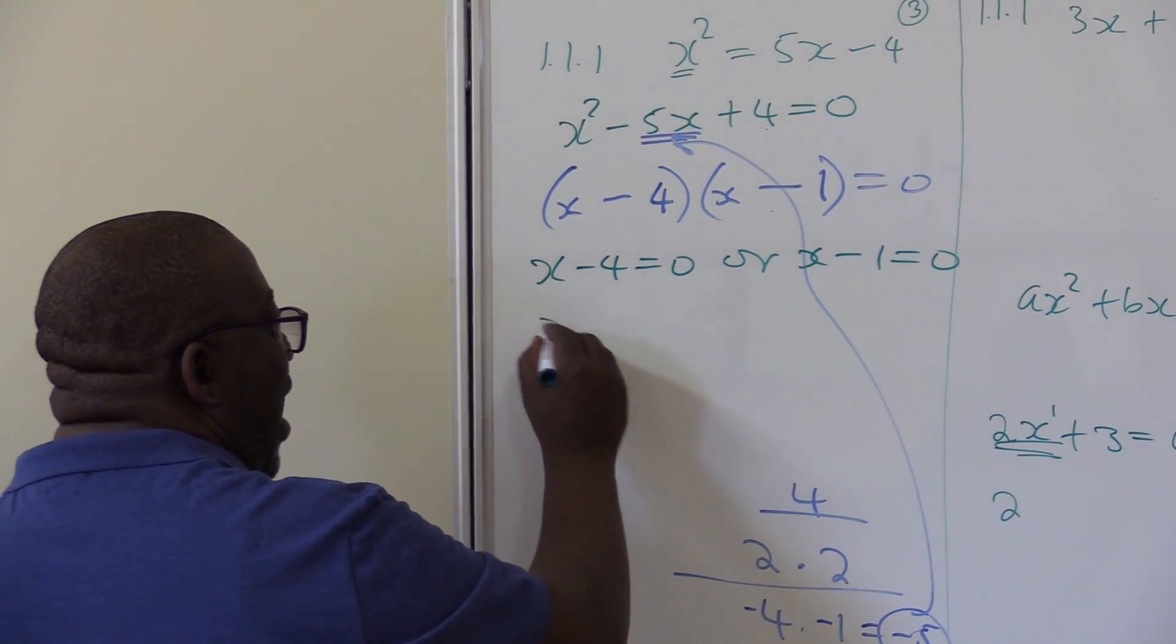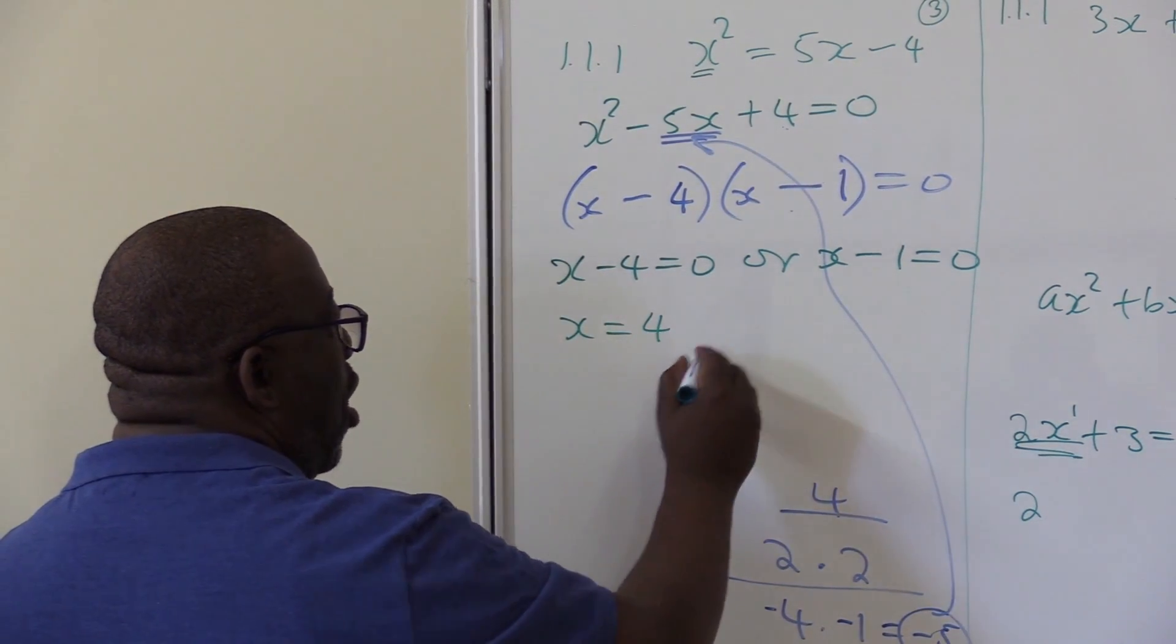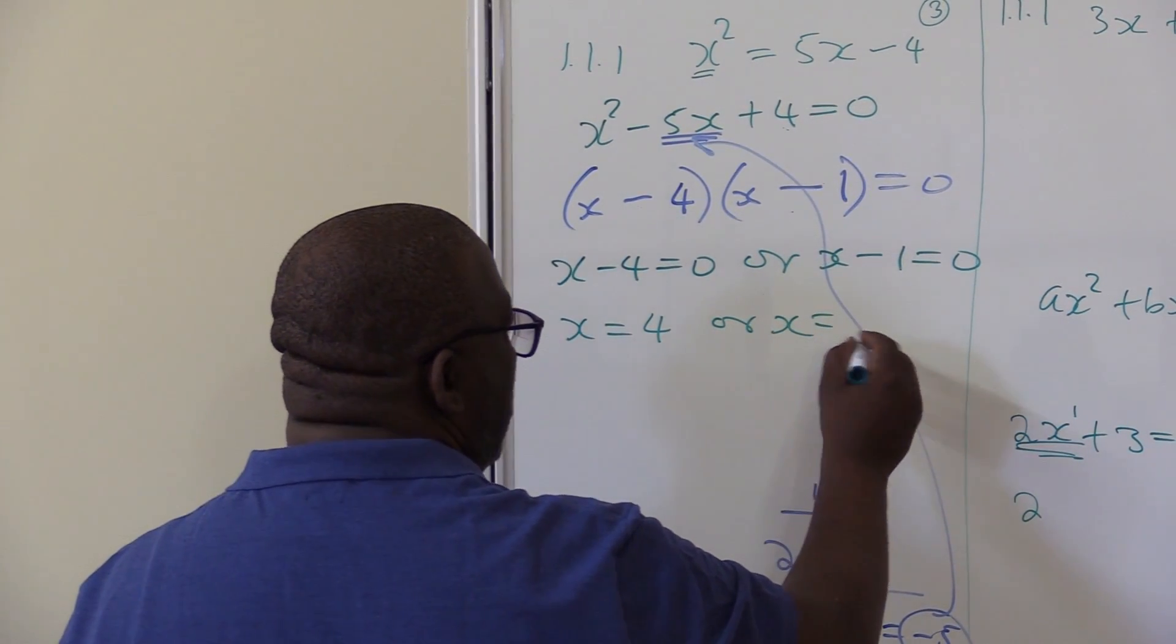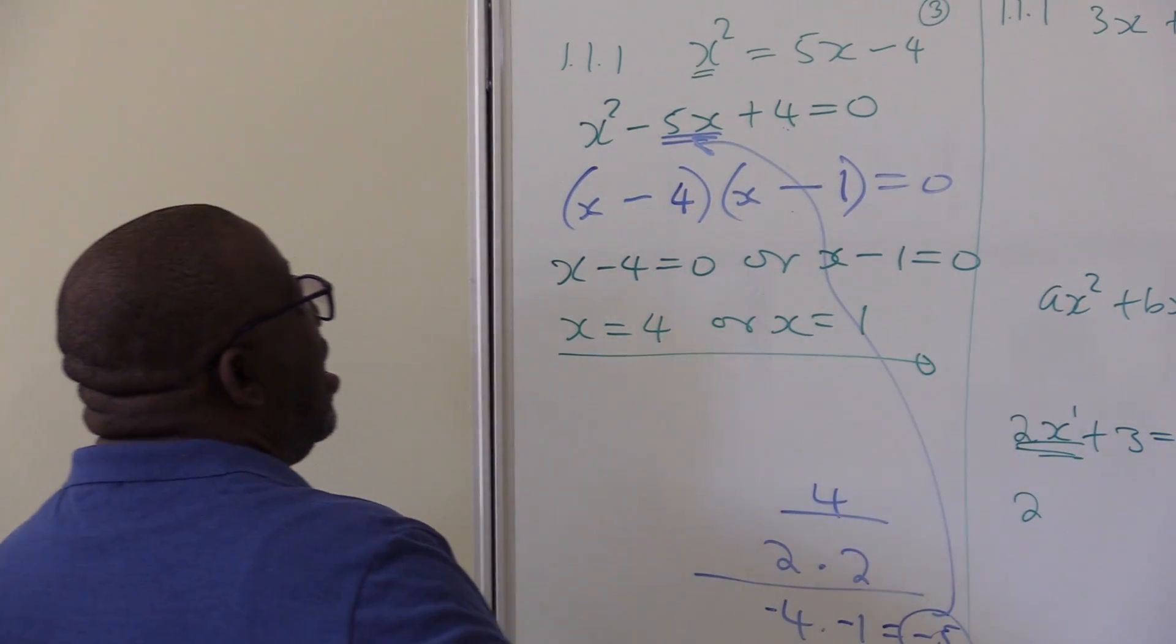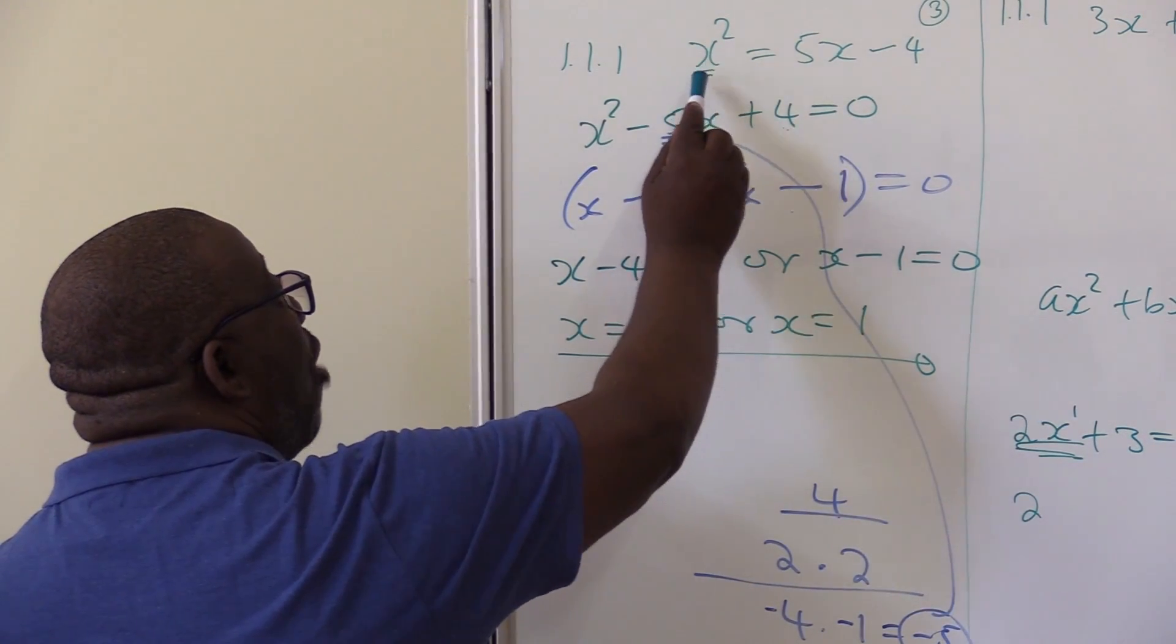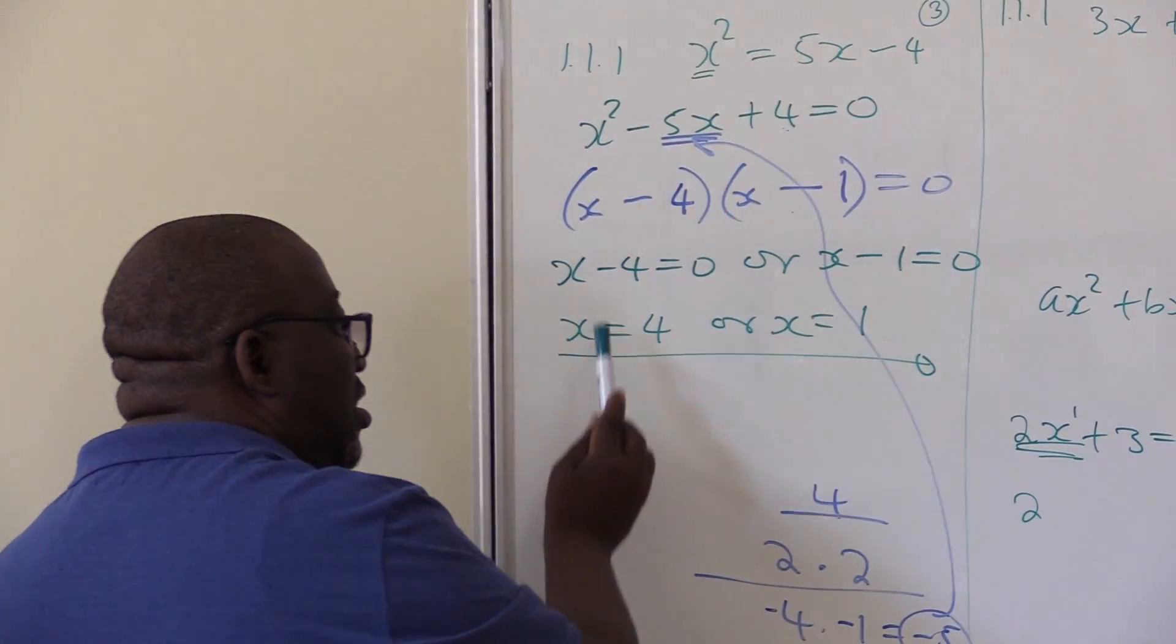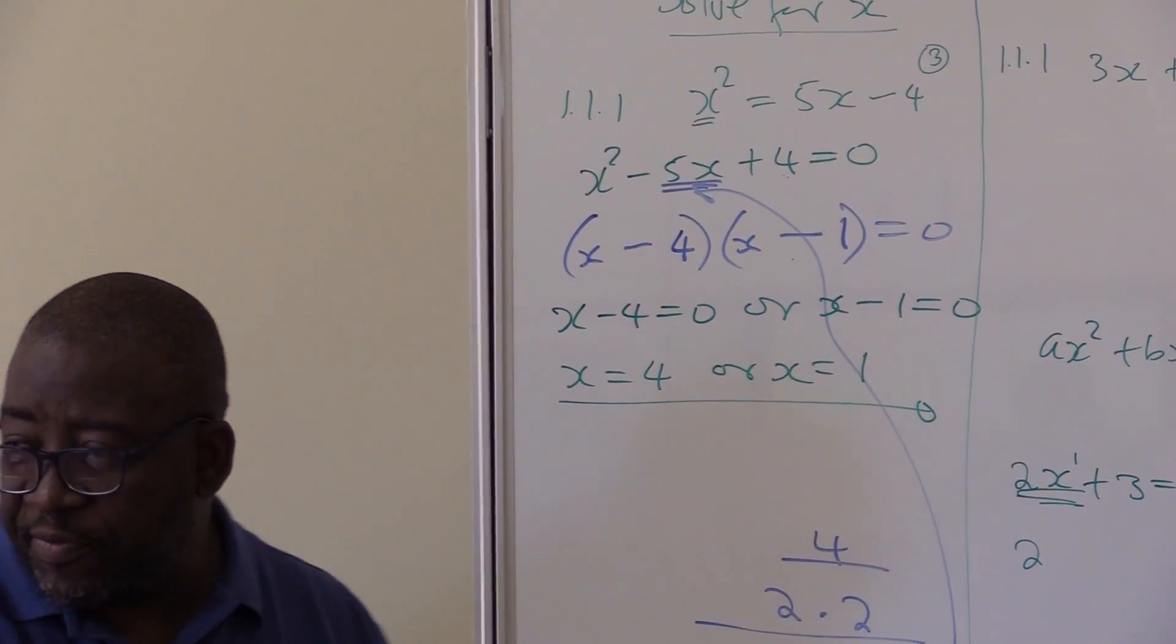Then solve for x. So x in this particular case will be, taking that side it will be positive 4, or x equals positive 1. This is our solution. This is x to the power 2. How many solutions do I expect? 2. Did I get 2 solutions? Yes, 1, 2. So this is how you go about factorizing.